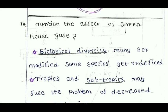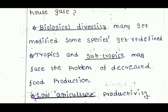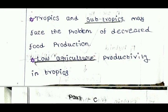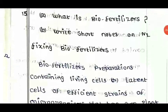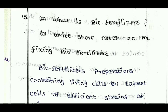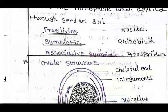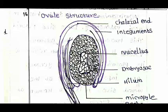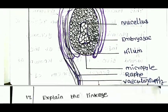Mention the effects of greenhouse gases: affects biological diversity, many species get modified, some species may get extinct. Tropics and subtropics may face problems — decrease in food production, low agricultural productivity in tropics. What are the biofertilizers? Azospirillum is one example. Ovule structure: integuments, nucellus, embryo sac, hilum, micropyle, vascular tissue supplements.